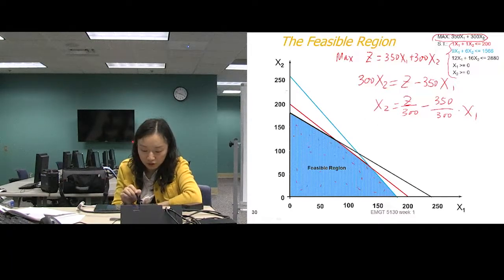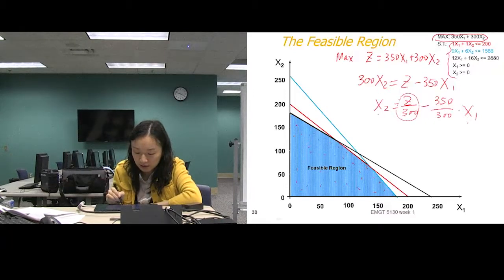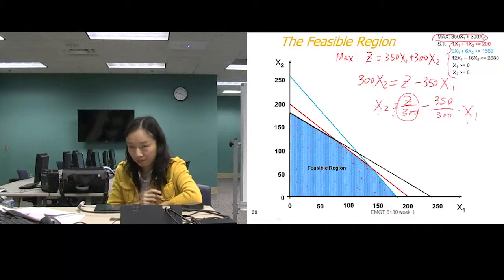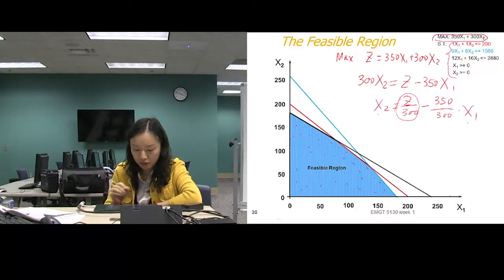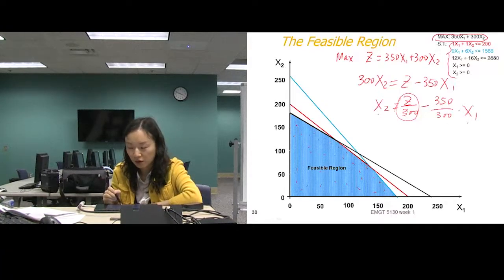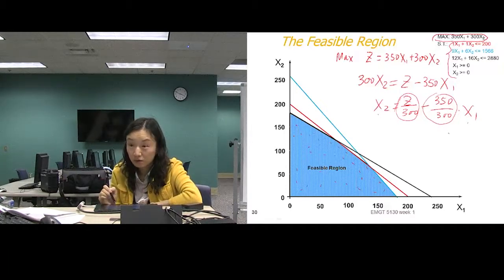From this function, X2 = Z/300 minus (350/300)X1, the slope is negative 7/6 and the intercept is Z/300. We want to maximize Z, which means maximizing the intercept. We can draw many different lines all with slope negative 7/6 — these are called level curves. We want the intercept to be as large as possible.